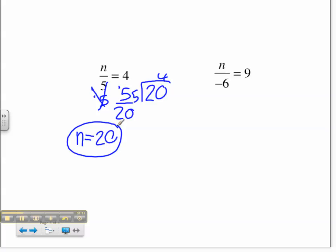And then for the next problem, it's n divided by negative 6 equals 9. So you do negative 6 times negative 6 and you cross that out.